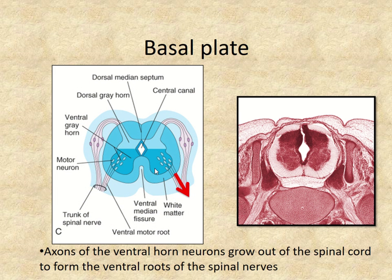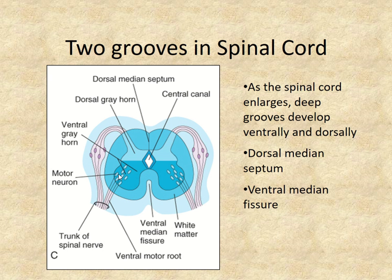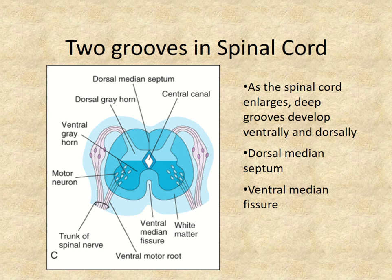The ventral roots of the spinal nerves are going to come out of the ventral horn of the spinal cord and go out to skeletal muscle. As the spinal cord develops and grows, the central canal reduces down into a smaller size. You end up having grooves that develop: the dorsal median septum on the dorsal side and the ventral median fissure on the ventral side of the spinal cord. These are anatomic points — if you're describing a lesion to another practitioner, you might need to use these terms to explain location.